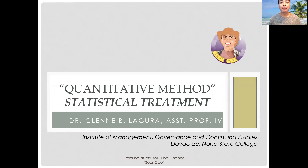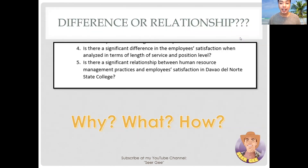Before proceeding to the specific statistical treatment you can use in analyzing your data, you need first to determine what type of statistical test your study requires. Usually, in your statement of the problem in Chapter 1, you can encounter questions looking for significant difference and/or significant relationship. You really need to know the difference between these two types of tests.